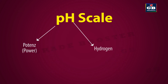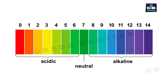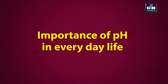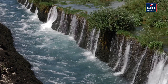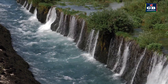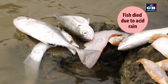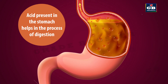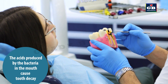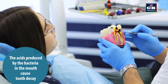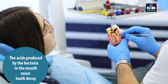We can know the strength of an acid or a base using the pH scale, which has values from 0 to 14. Substances with pH 7 are neutral, below 7 are acidic, and above 7 are basic. The pH of water in water bodies is important for aquatic life. Our stomach produces hydrochloric acid that helps in digestion of proteins, and tooth enamel can be dissolved by acids produced in the mouth by the action of bacteria.